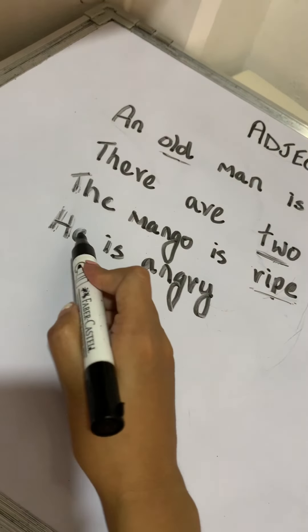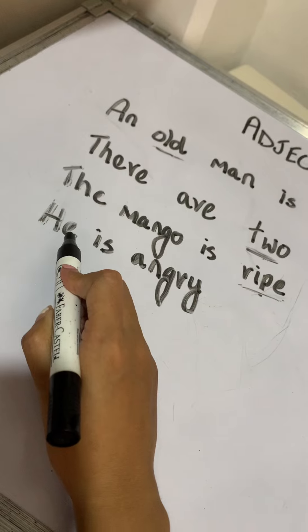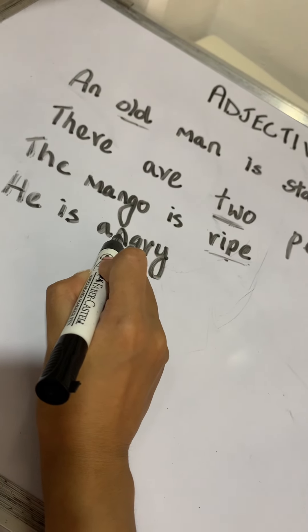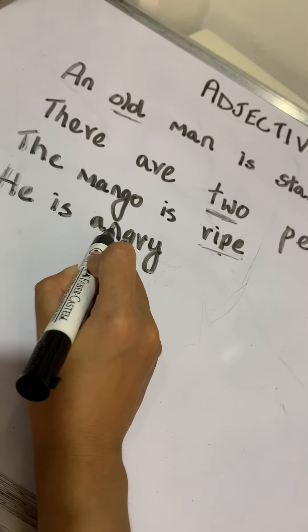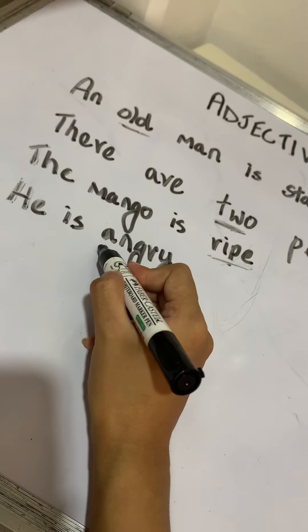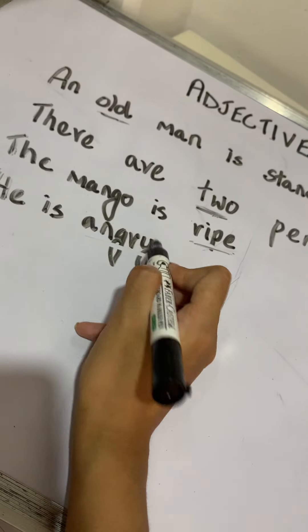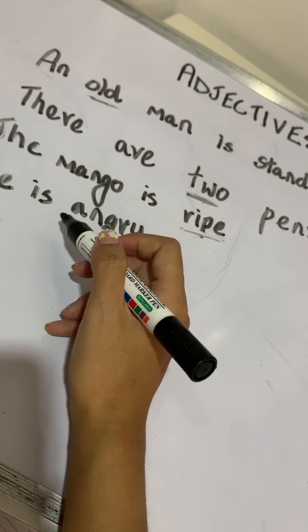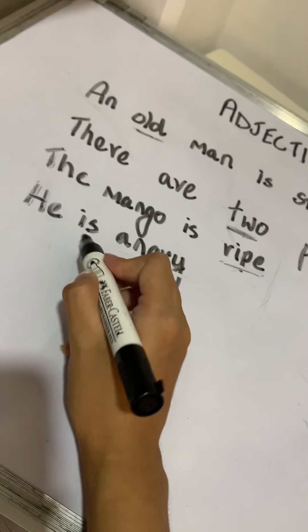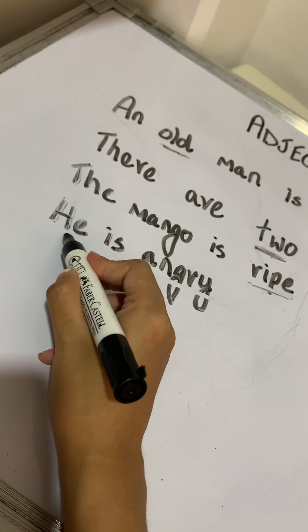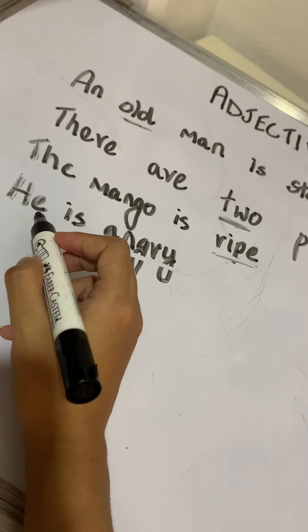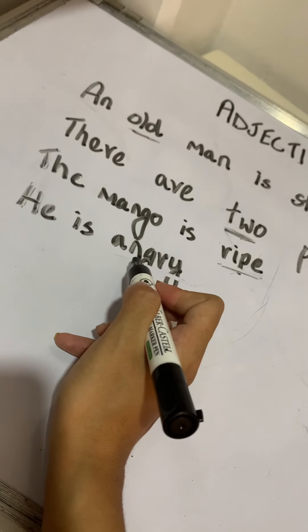Next sentence: he is angry. The adjective angry tells us more about the pronoun he. So, the adjective is angry.